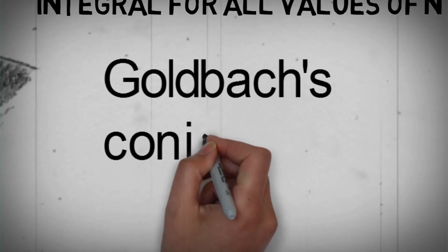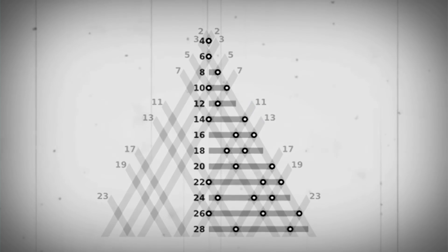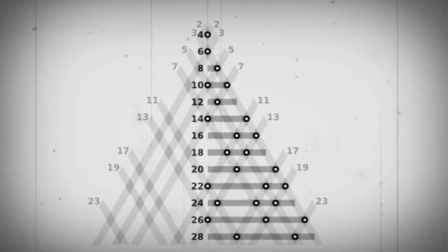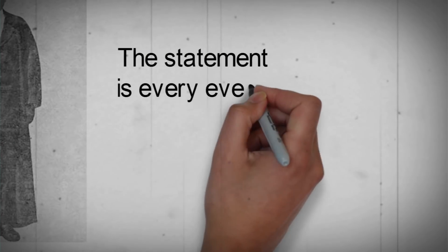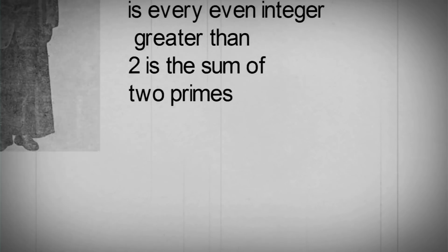Goldbach's conjecture is one of the important illustrations of Ramanujan's contribution towards the proof of the conjecture. The statement is that every integer greater than 2 is the sum of 2 primes. For example, 6 is 3 plus 3.